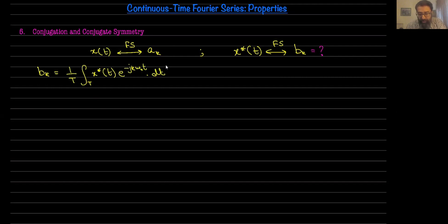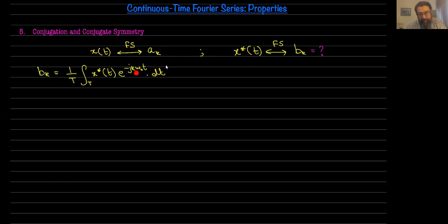One important thing to note here is that when I take the conjugation, the periodicity is not affected — x conjugate of t is still periodic. Moreover, the period for this is exactly the same as the period for x(t), and therefore the frequency of x conjugate of t is also omega-naught, exactly the same frequency as x(t).